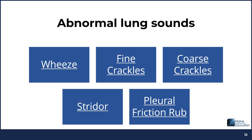Next is stridor — a loud, low-pitched whistling sound heard during inspiration, due to a mechanical obstruction of the trachea or upper airway narrowing. Croup has a common distinct sound of stridor. Last is a pleural friction rub, caused by inflammation of the pleura, resulting from friction as the pleural surfaces rub together, creating a leather creaking sound.